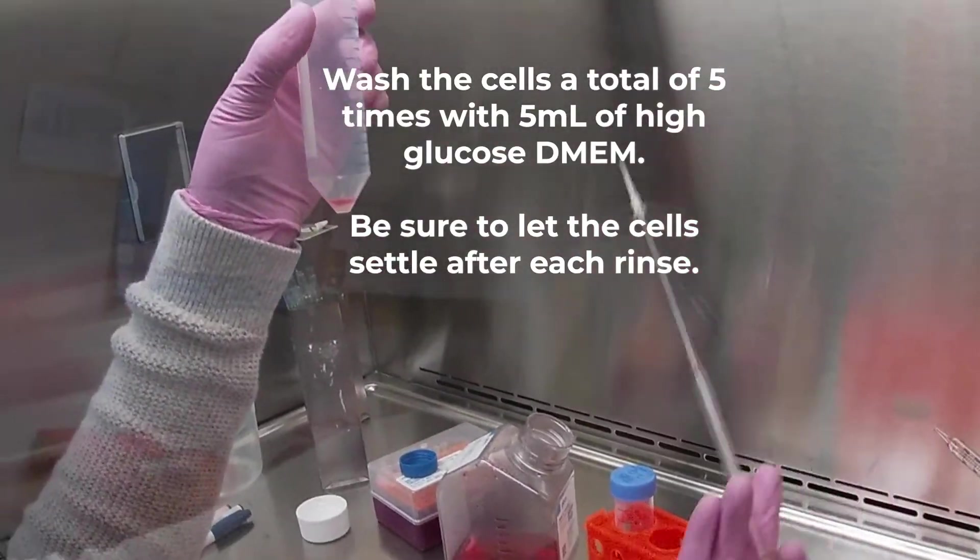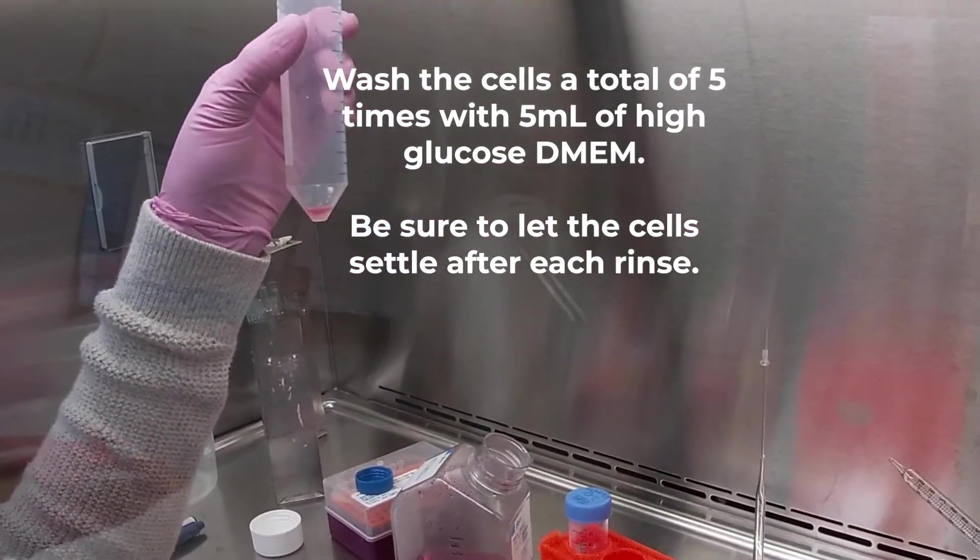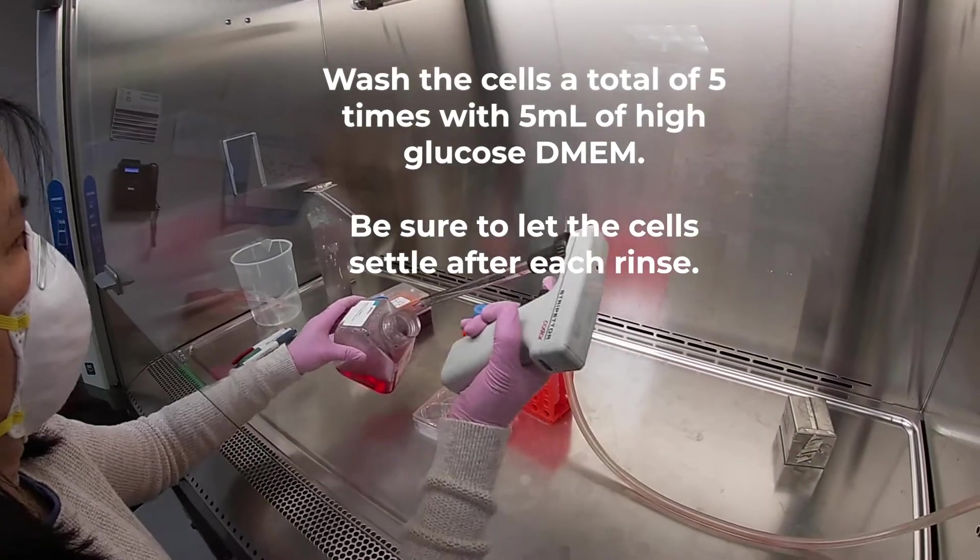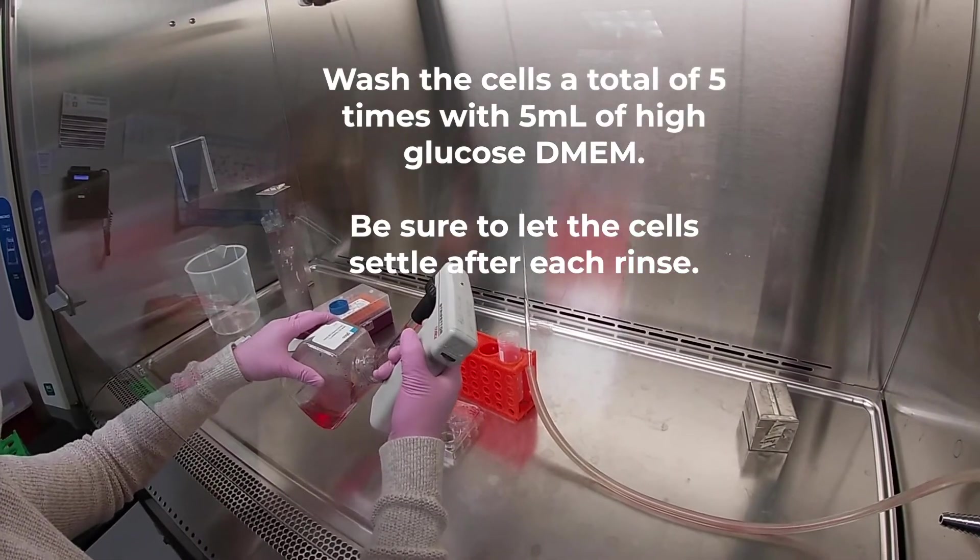We're going to wash the cells five times with 5mL of high glucose DMEM each time. And again, just let the cells settle after every single rinse.